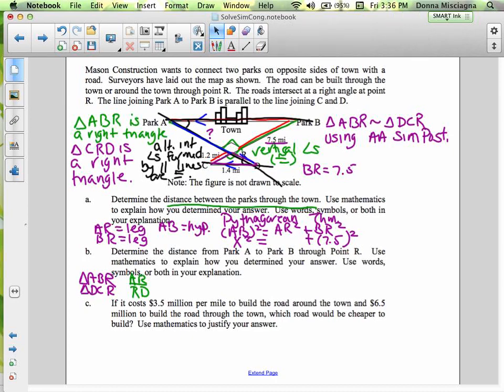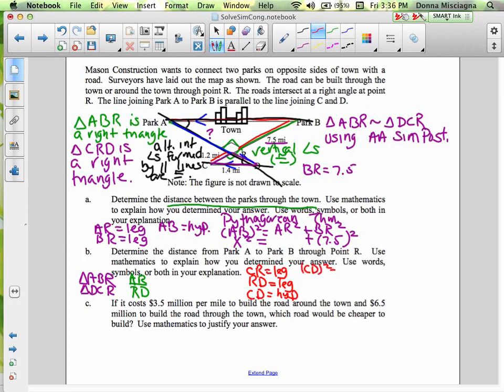We're still working on distance through the park between the towns. Just so happens though, we're going to get some of the other information we need while we're looking for the distance through the park through the town. All right, so CR there is the leg, and RD is a leg, and CD is the hypotenuse. So let's solve for the one thing we know, we can find. We have all the information for, let's find RD, all right, because we can use Pythagorean theorem. So we're going to set this up as CD squared equals CR squared plus RD squared.